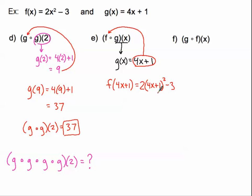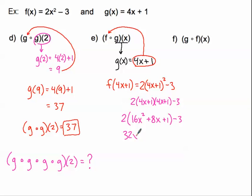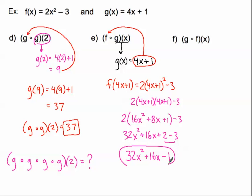Now we have to foil that binomial. I'll write it side by side to see the pattern. Foiling 4x plus 1 squared: I get 16x squared, the inner and outer terms double so that's 8x, and the last terms make 1. Distributing the 2 in: 32x squared plus 16x plus 2, then minus 3. Combining like terms: 32x squared plus 16x minus 1. That's our final expression — a trinomial — because the composite function started with an x in it.